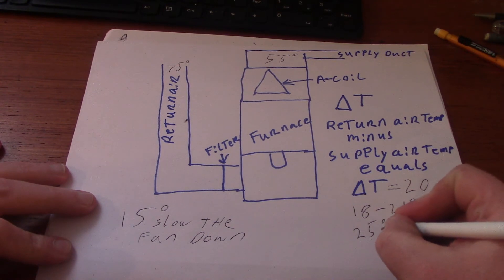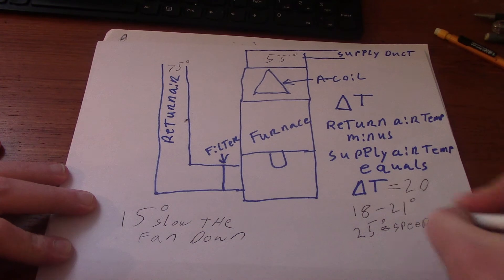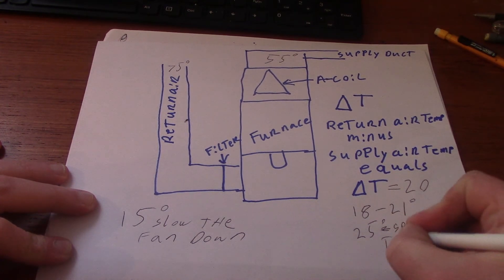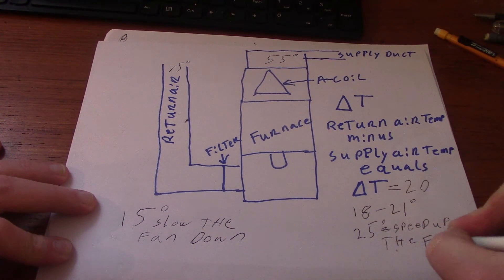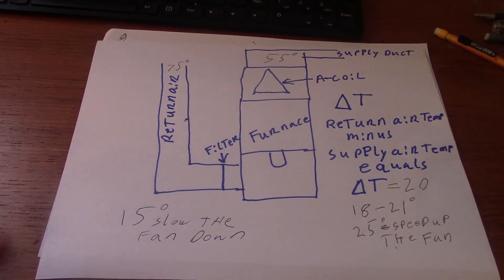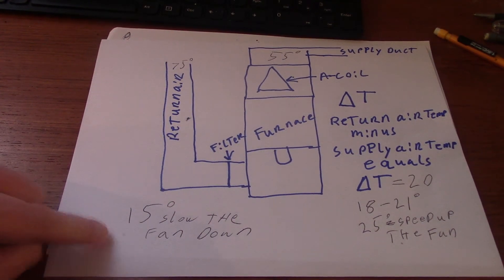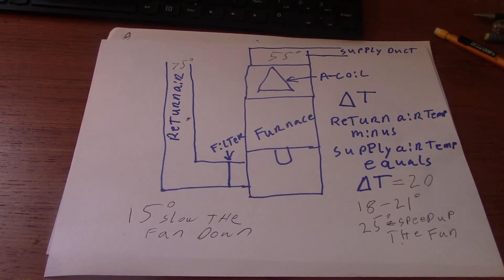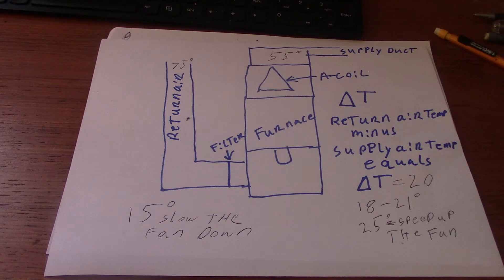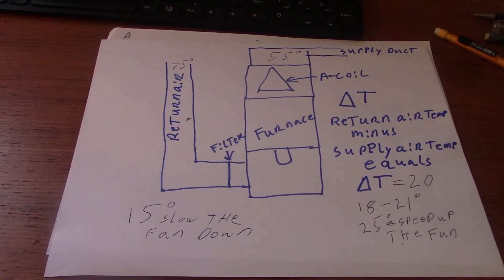So if you're at 25 degrees, you need to speed up the fan. If it's on medium speed, kick it up to high speed. For the 15, if it's on high speed, put it down to medium or medium high speed, to get it proper for it to work efficiently and appropriately.